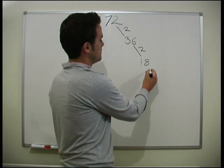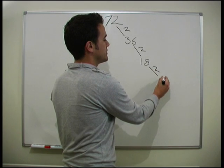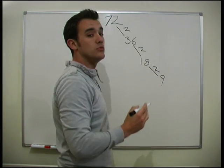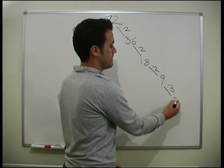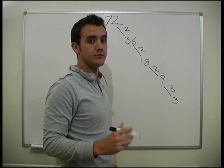Will 18 divide by two? Certainly will. It will give us nine. Will nine divide by two? No. Will nine divide by three? Yes, it will. It will give us three. And three is a prime number, so we stop there.